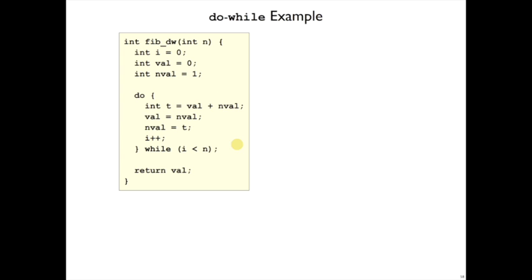For example, here's the Fibonacci function written with do-while. We have these variables i, val, and nval. For Fibonacci, we need to keep track of the last couple of results. It goes around as long as i is less than n, where n is the argument that tells us how far to go in the Fibonacci sequence.